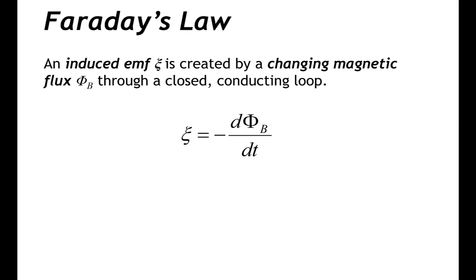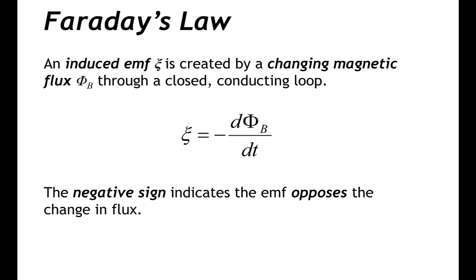Faraday's law says that an induced EMF is created by a changing magnetic flux through a closed conducting loop. This induced EMF is equal to minus the time rate of change of magnetic flux. That minus sign indicates that the EMF opposes the change in the flux.